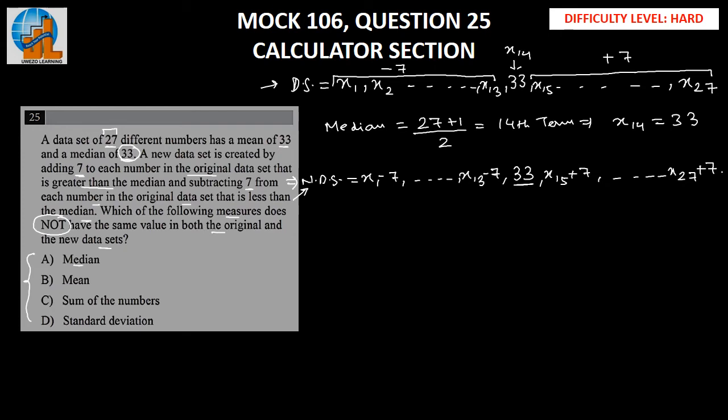Let's start with option A, which is the median. The median for the original data set is 33, and the median for the new data set is also 33. The median is not changing in either data set, so we can eliminate option A.